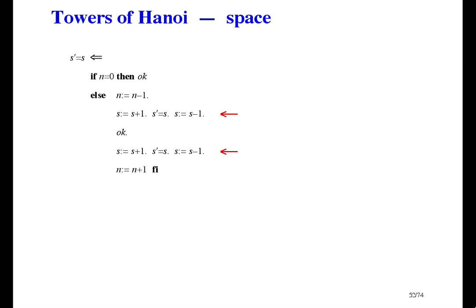The two recursive calls begin by pushing a return address onto a stack. And, they end by popping the return address off the stack. So, I've put s gets s plus 1 just before the call. And, s gets s minus 1 just after the call. I suppose the disk movement doesn't increase or decrease the space. And, I'm not counting time right now. So, it does nothing of interest. This refinement is easy to prove, but not very informative about space usage.